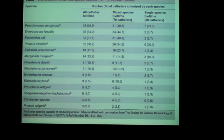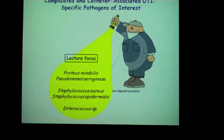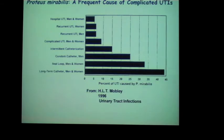A survey of 106 biofilms shows the different organisms isolated, and biofilms are often mixed with more than one species. The organisms to pay attention to are Proteus mirabilis, Pseudomonas aeruginosa, Staph aureus, Staph epidermidis, and Enterococcus, which we haven't covered yet.